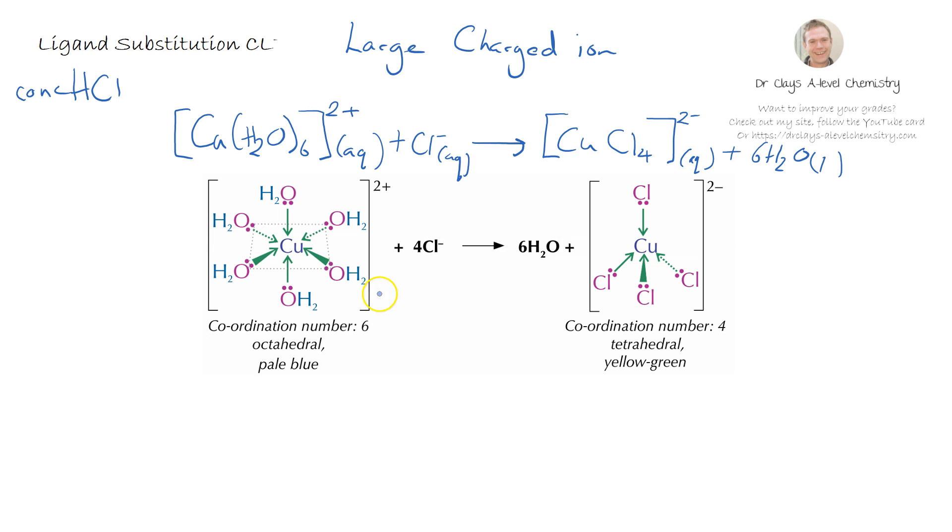Because we have got both a change in coordination number we have also got a change in ligand. We therefore have a change in colour from pale blue to a nice yellow green colour and that is because we see a change in coordination number, a change in overall shape and a change in ligand. The exam board does not specify any particular elements or complexes for you to recall for this just that ligand substitution occurs for Cl- where we tend to get a change in coordination number and a change in shape.